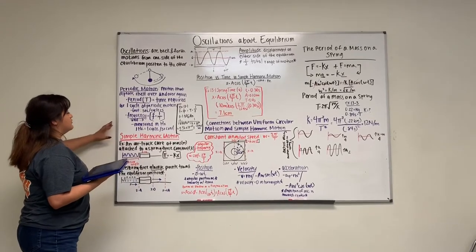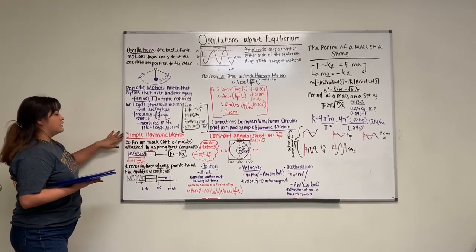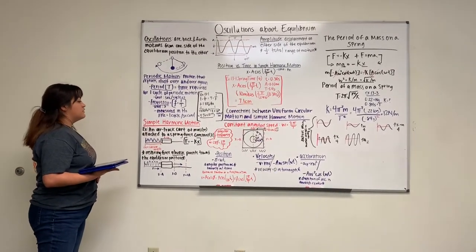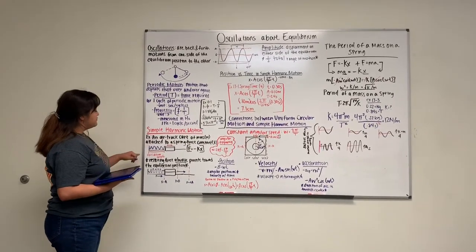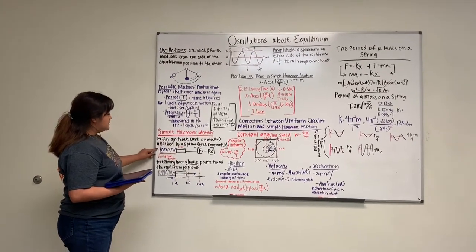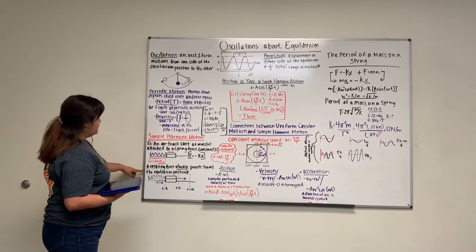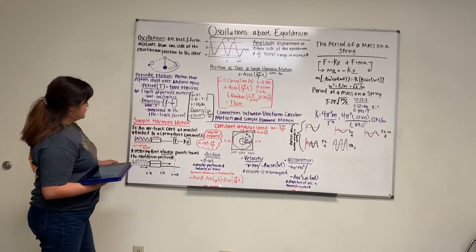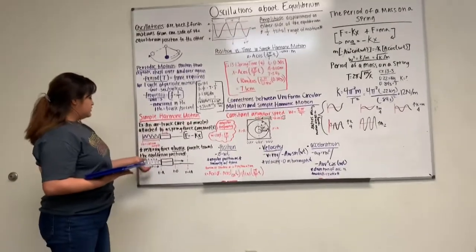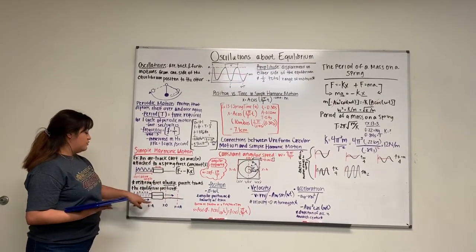That is basically the periodic motion. A big part of periodic motion, which is a type of it, is simple harmonic motion. An example of simple harmonic motion is an air track car of mass attached to a spring with a force constant. I drew a little car at a surface attached to a spring. It's at a resting state since its equilibrium length is just equilibrium. The restoring force always points towards the equilibrium position. When you take the cart and push it towards the spring or pull it against the spring, you have a force acting upon it, which creates motion.